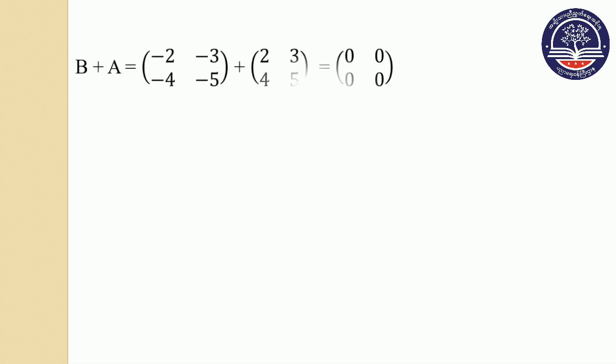Similarly, B plus A: minus 2, minus 3, minus 4, minus 5 plus 2, 3, 4, 5 gives 0, 0, 0, 0, 0, 0. So B plus A also equals the zero matrix.